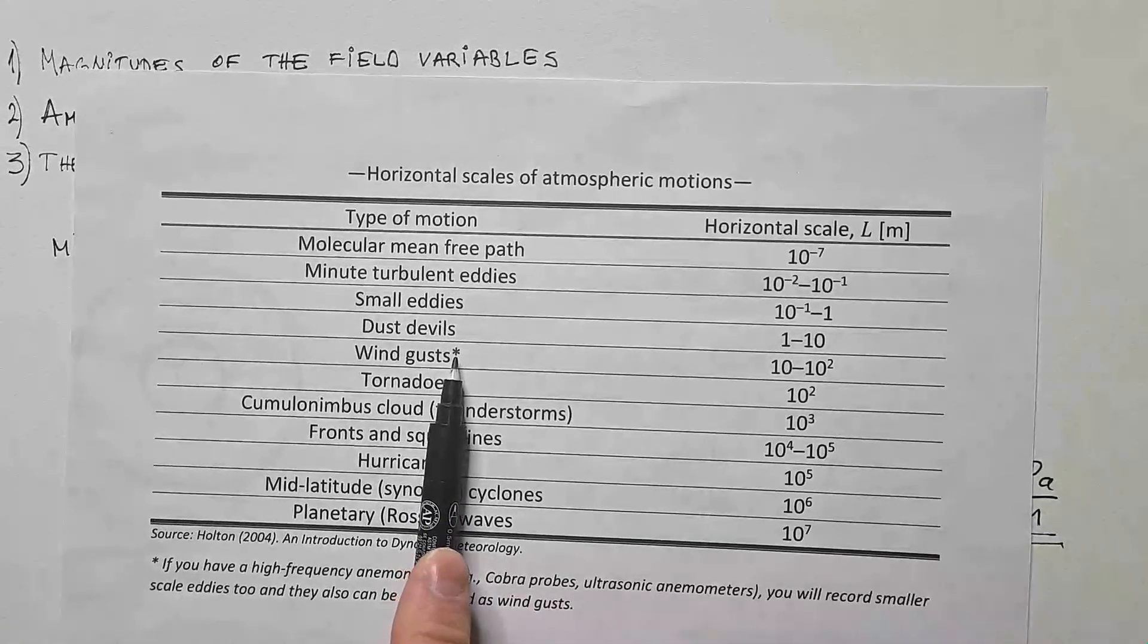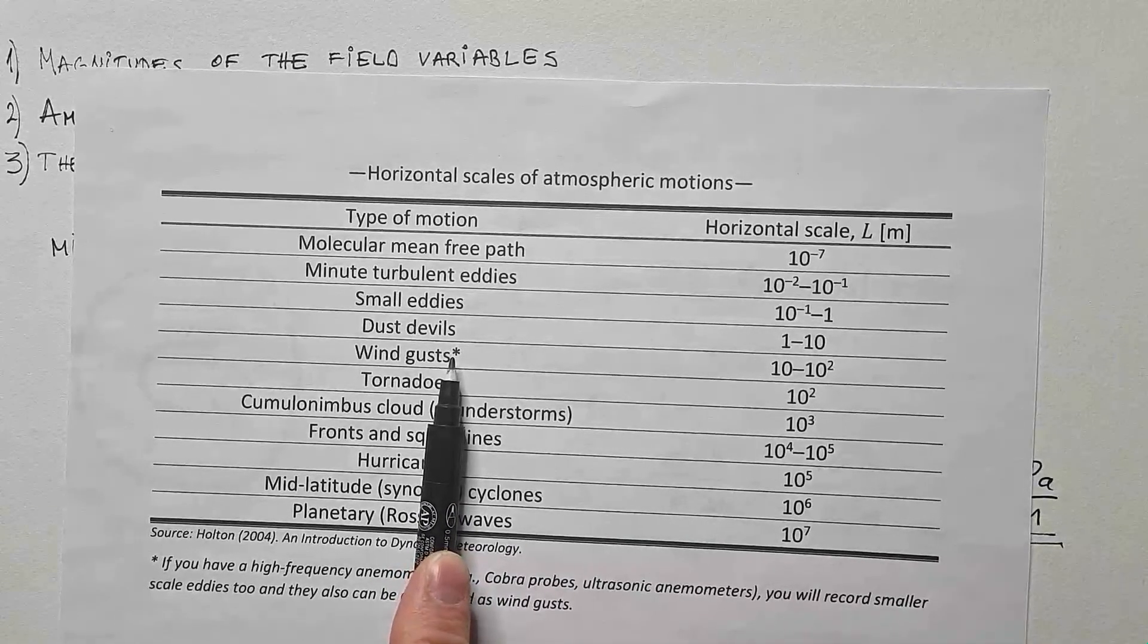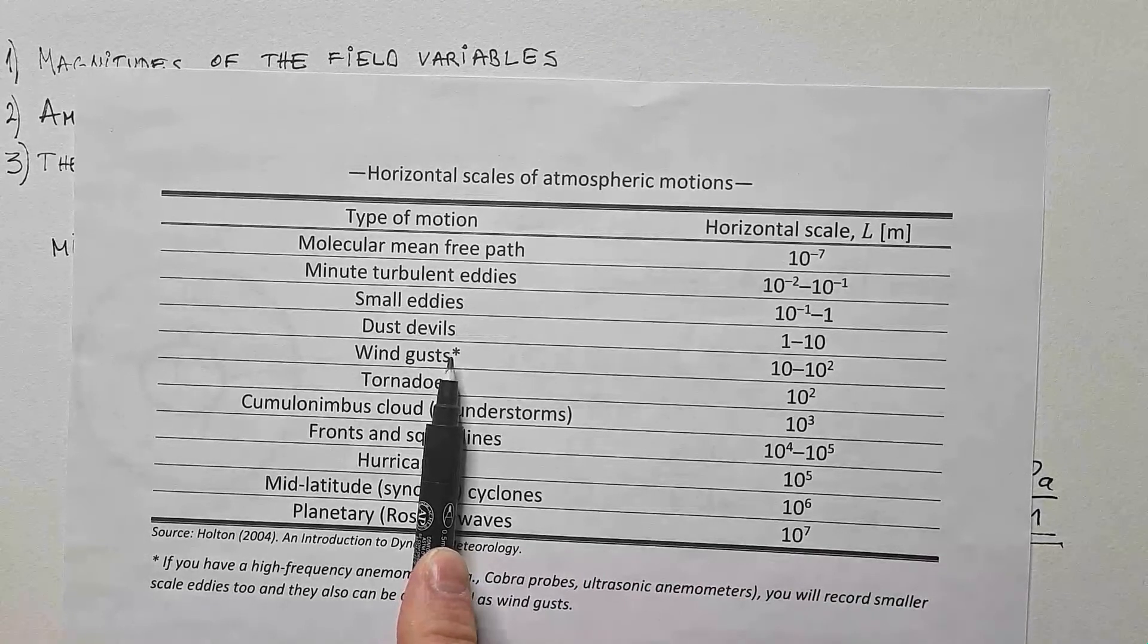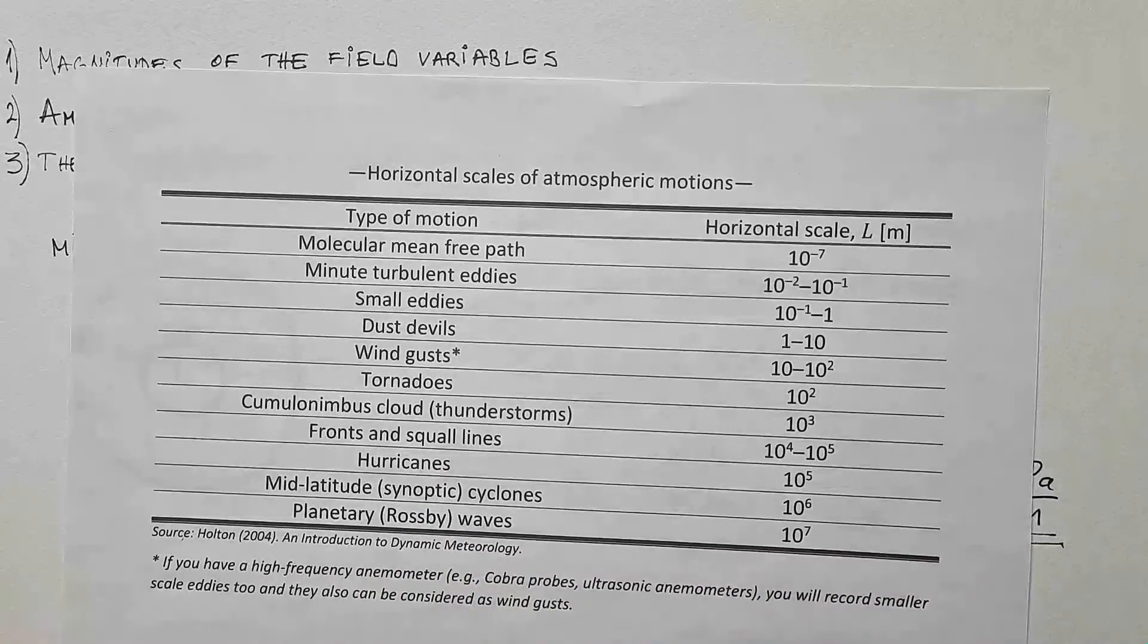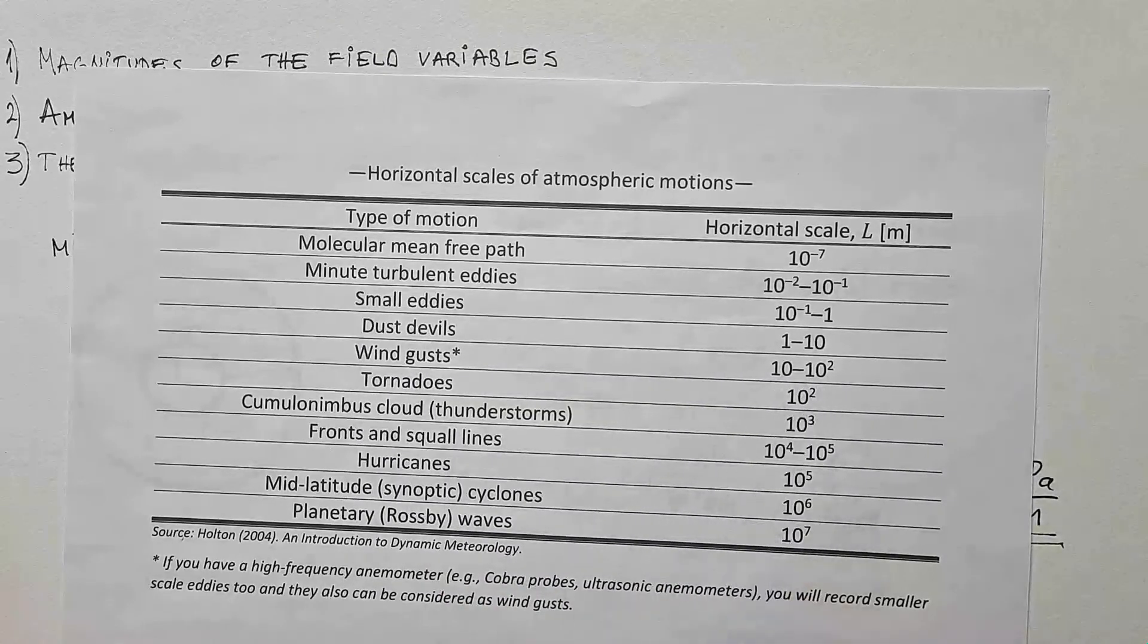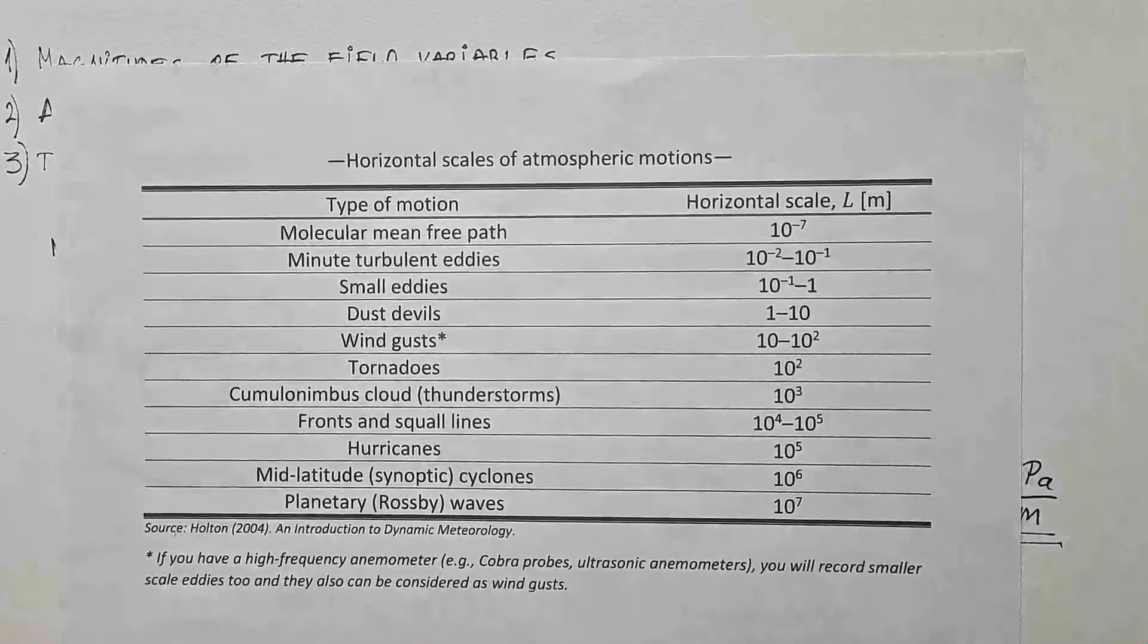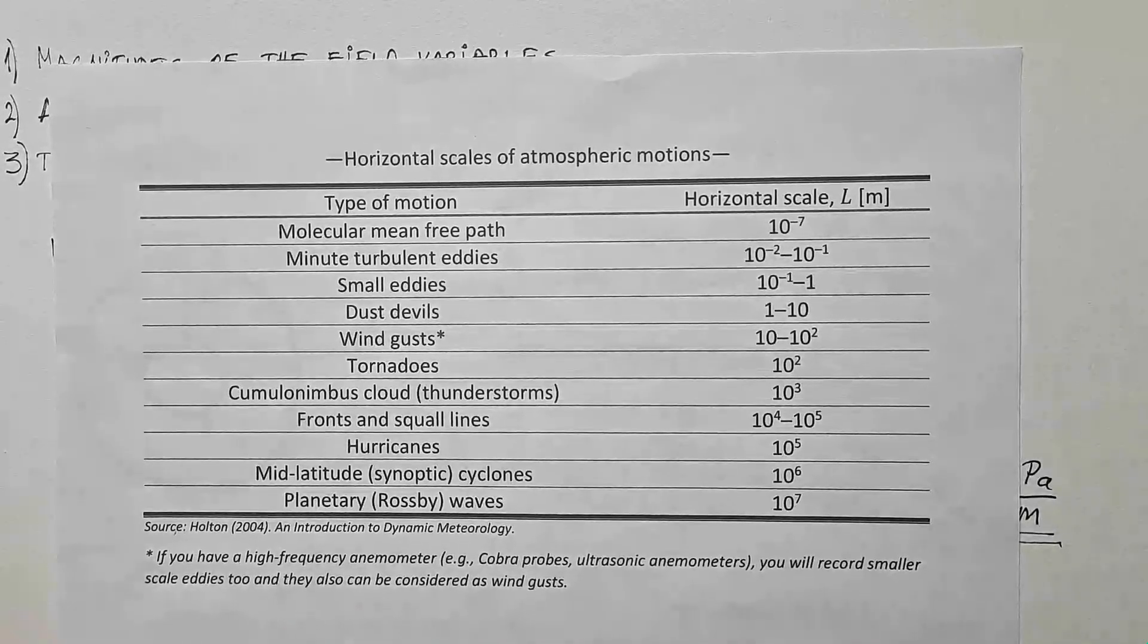Namely, wind gusts have these scales if you have cup anemometers, or some low response anemometers. If you have very, and I put it here, if you have very, very high frequency anemometers, such as ultrasonic anemometers, or cobra probes, cobra probes can measure up to 5 to 10,000 hertz.